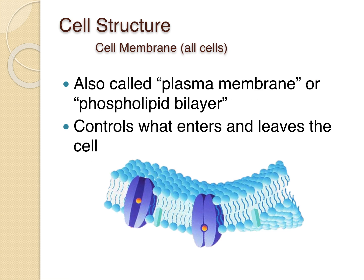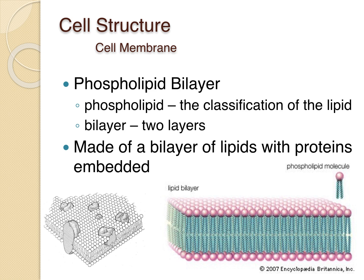The cell membrane can also be called the plasma membrane or the phospholipid bilayer, and it controls what enters and leaves the cell. Breaking down the term: phospholipid refers to the classification of lipid, and bilayer means two layers. So the cell membrane is made of two layers of lipids with proteins embedded. One phospholipid molecule looks like a little head with two tails, and the bilayer has large protein chunks embedded within it.